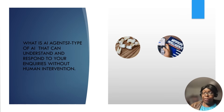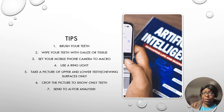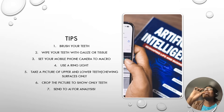Before you take a picture with your mobile phone and send it to the AI agent, please brush your teeth first because it needs a very clear picture. Wipe your teeth with gauze or tissue, set your mobile phone to macro lens, and use a ring light if you can, or any bright light or flash. Then take a picture of your upper and lower teeth chewing surfaces.